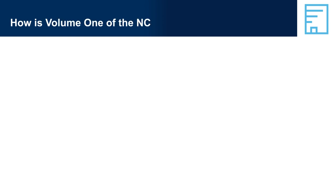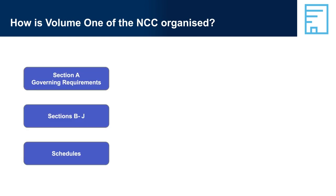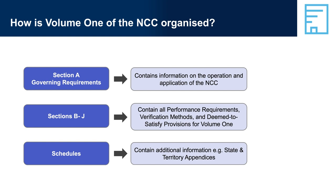How is Volume 1 of the NCC organised? Section A contains the governing requirements, which are the same in all volumes of the NCC. This includes information on building classifications and reference documents. As the governing requirements are the same across all volumes of the NCC, it will not be discussed further in this module — it is discussed in the Understanding the NCC module. Sections B to J contain all the performance requirements, verification methods and DTS provisions for Volume 1, applicable to Class 2 to 9 buildings and some Class 1B and Class 10 building structures.